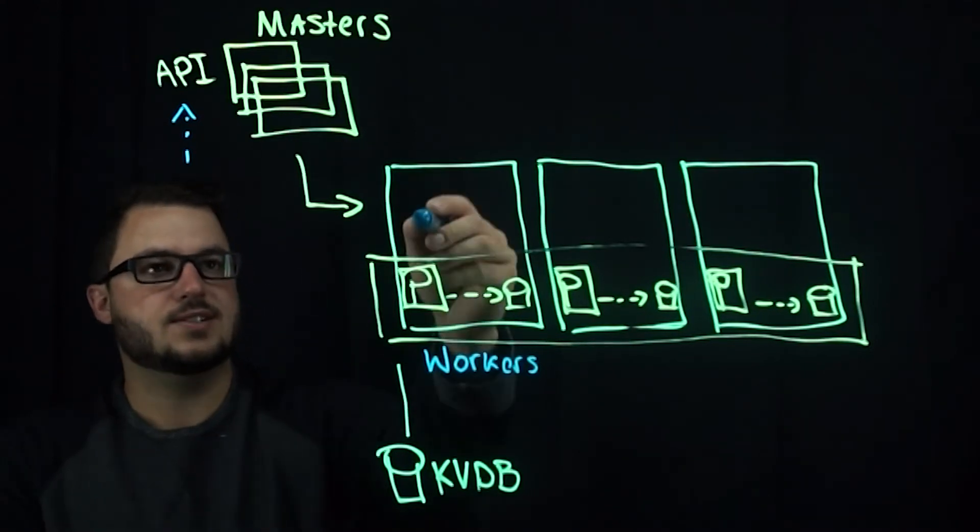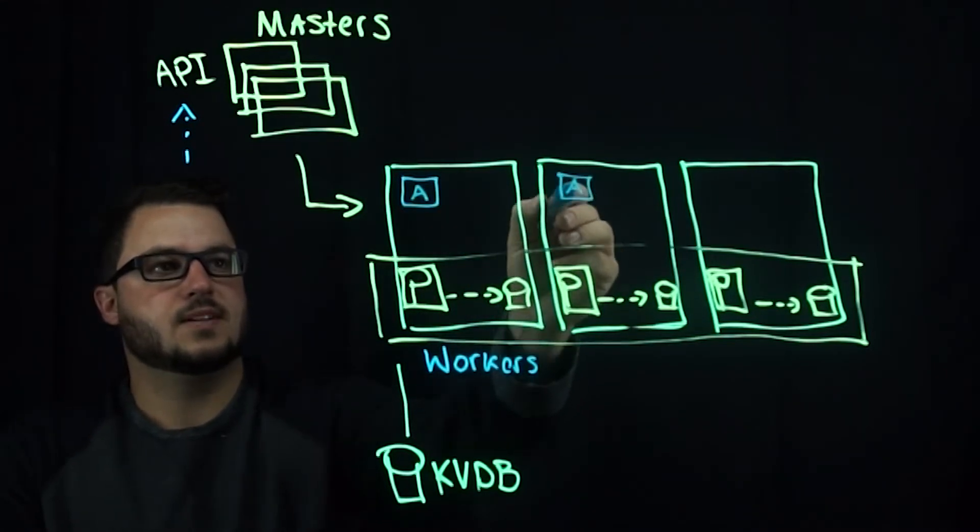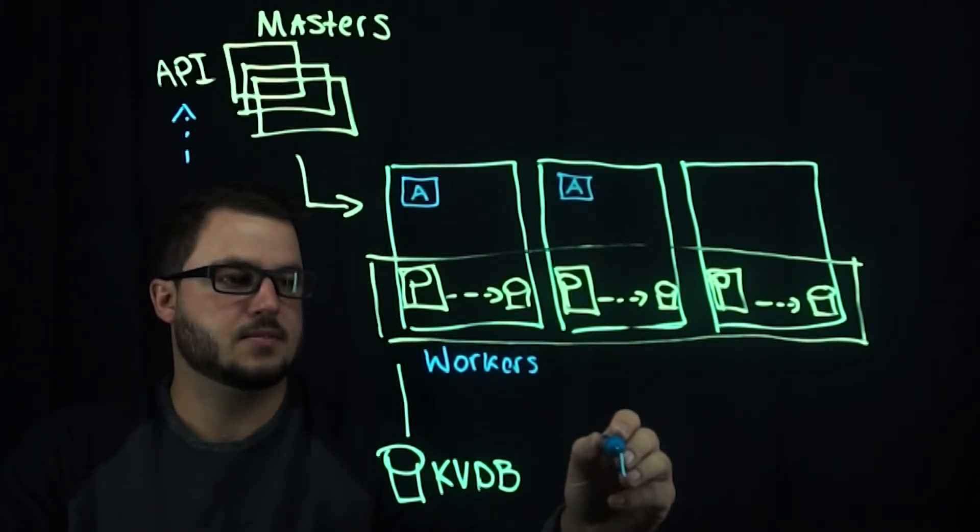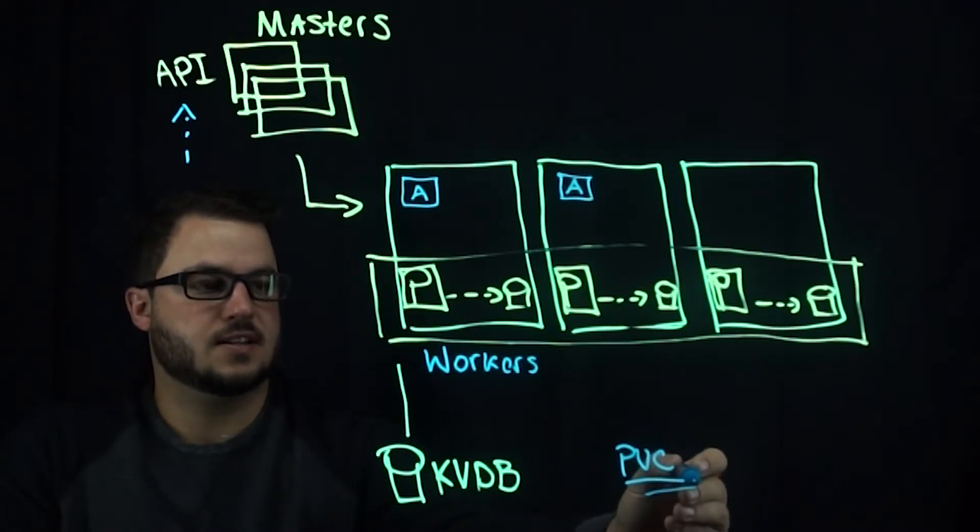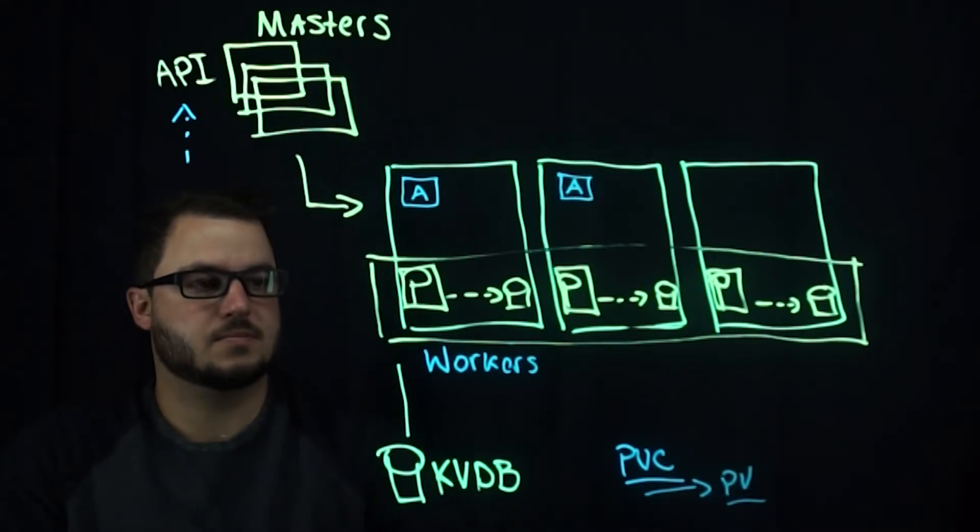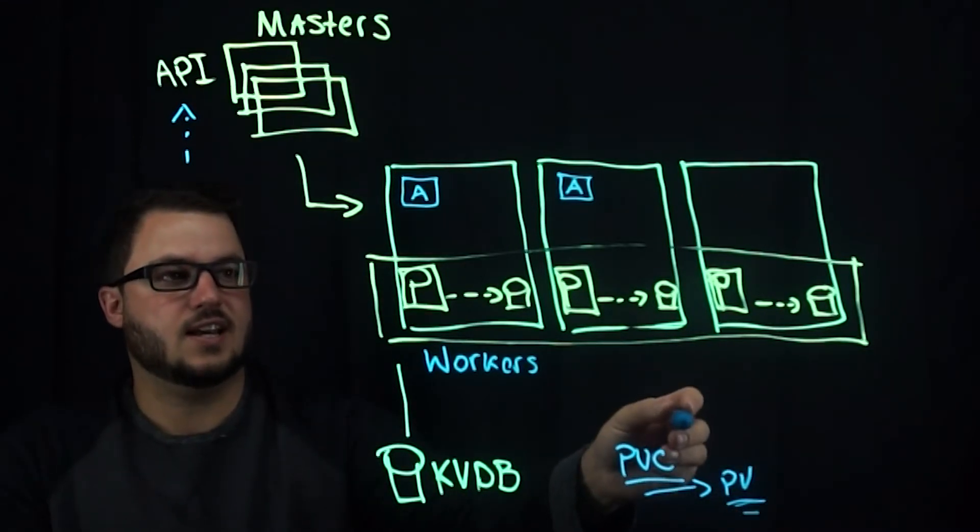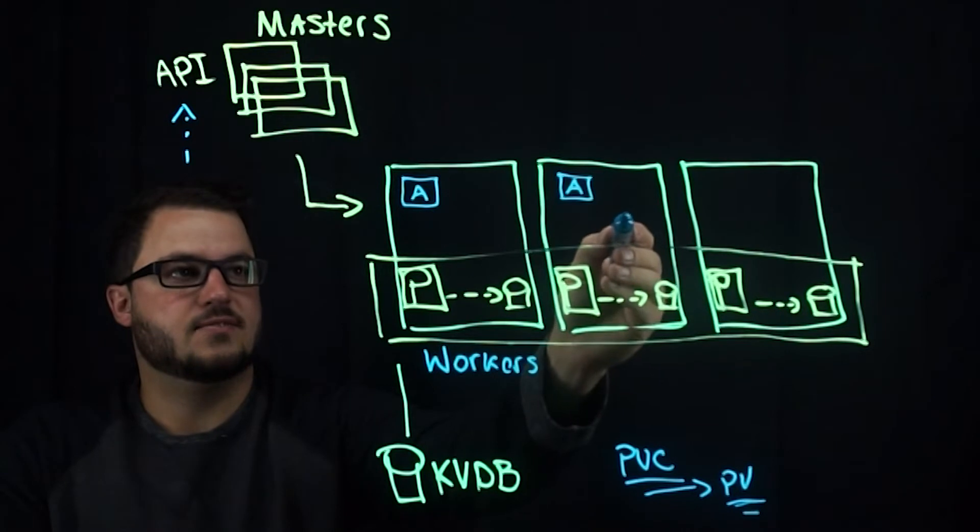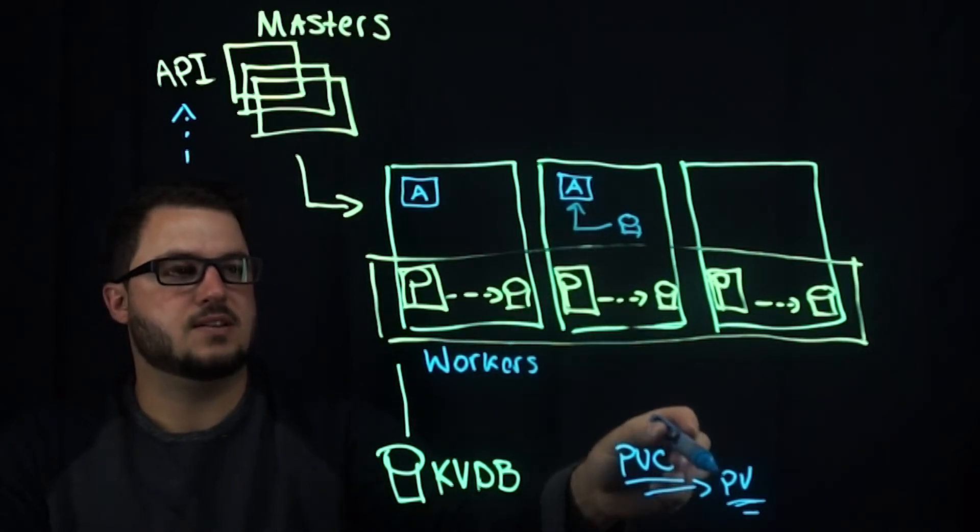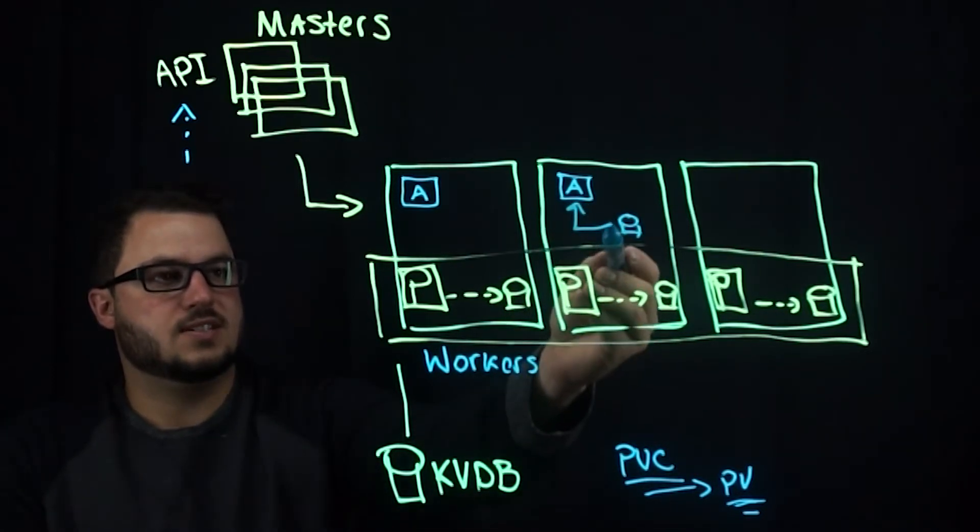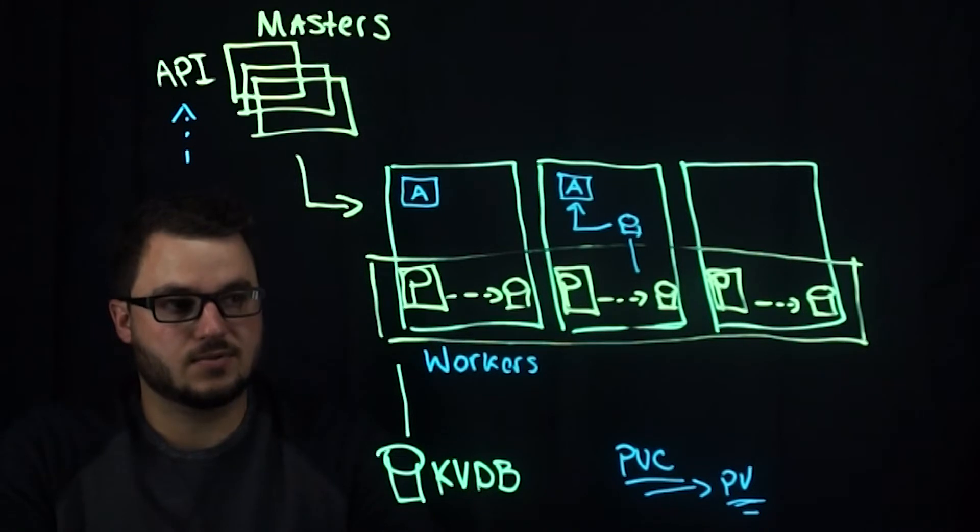As you deploy applications in your pods, applications can use something called a PVC, a persistent volume claim, which creates a PV through dynamic provisioning. That PV is actually what connects a volume provisioned from this pool to an application. So PV is a representation of a disk provisioned from Portworx, and then it gets mounted into the container and the application writes to it.